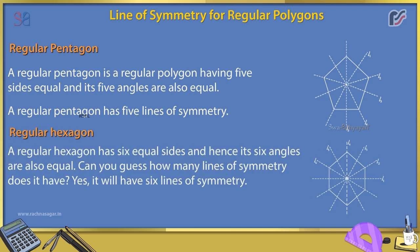Regular hexagon. A regular hexagon has six equal sides and hence its six angles are also equal. Can you guess how many lines of symmetry it has? Yes, it will have six lines of symmetry. Thus, a regular hexagon has six lines of symmetry.